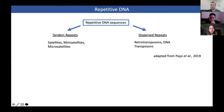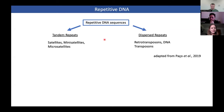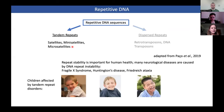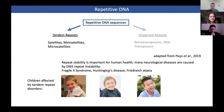Repetitive DNA can generally be divided into tandem repeats and dispersed repeats. Tandem repeats are satellites, like mini-satellites and micro-satellites. DNA repeat stability is important because the failure of maintaining a constant number of repeats can result in many neurological diseases, like Fragile X syndrome, Huntington's disease, and Friedreich's ataxia.